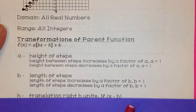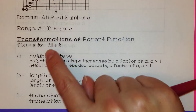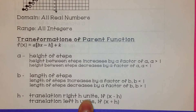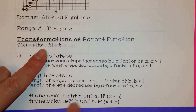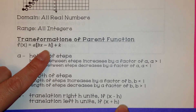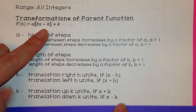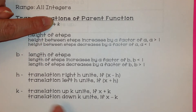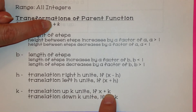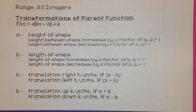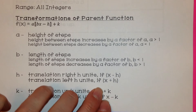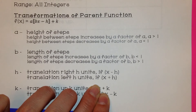'a' and 'b' affect the graph very differently. 'h' is a translation right h units if it's x minus h inside, and translation left h units if it's x plus h inside. And 'k', the value added on the outside, is a translation up k units if it's plus k, and translation down k units if it's minus k.